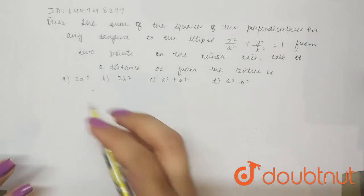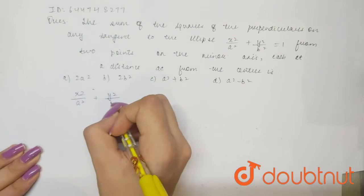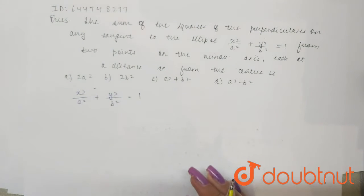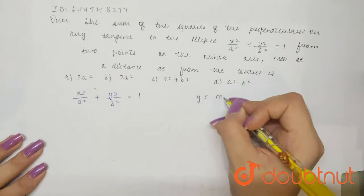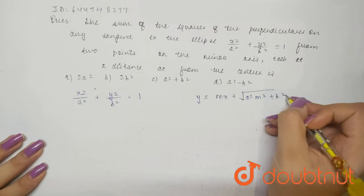We are having this ellipse, the ellipse is x square by a square plus y square by b square is equals to 1. Now look at this carefully, any tangent to the ellipse having slope m, so the tangent is always given by y is equals to mx plus under root a square m square plus b square.